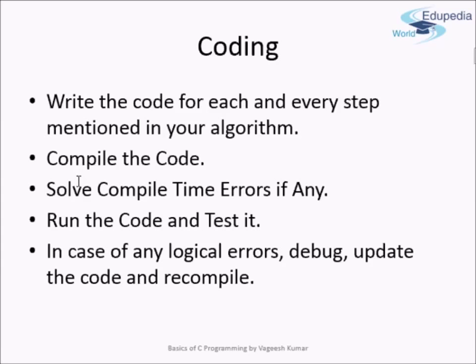Once the code compiles, you proceed to run it and test it. If any logical errors are present — for instance, if you entered the wrong formula — you will only discover them after running the code and seeing that the result is not as expected. You then look into your code and debug it. Once debugging is complete, the programming process is finished.